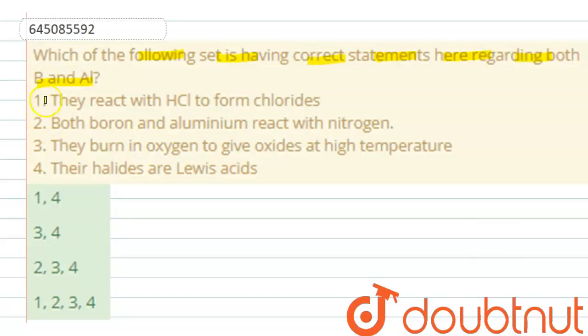Both boron and aluminium. Let us see the first statement: they react with HCl to form chlorides. Truly speaking, boron does not react with even boiling HCl.